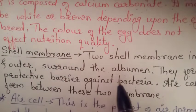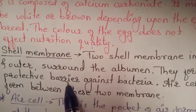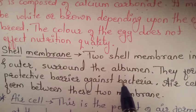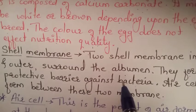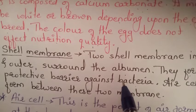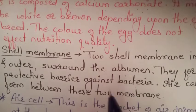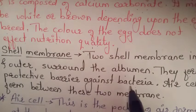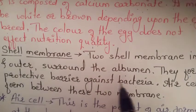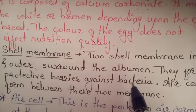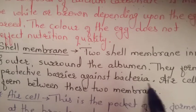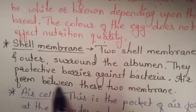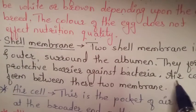The shell membranes form a protective barrier against bacteria. They prevent the entry of any bacteria or viruses from outside. Shell membranes protect the egg from bacteria. An air cell forms between these two membranes.